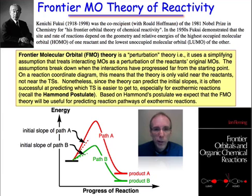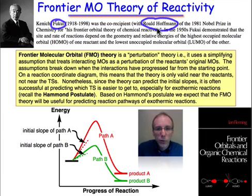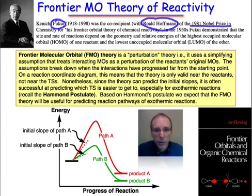For his work that introduced us to the FMO theory to explain chemical reactivity, Fukui, along with Roald Hoffmann — who also introduced a molecular orbital theory to explain chemical reactivity — shared the 1981 Nobel Prize in Chemistry.